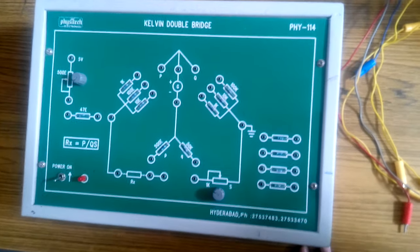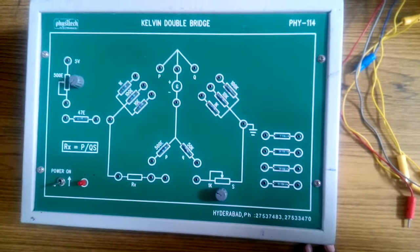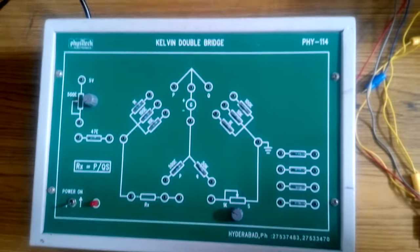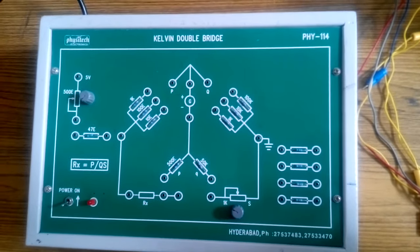Kelvin's double bridge is a bridge circuit used for the measurement of small resistances, typically less than 10 ohms.